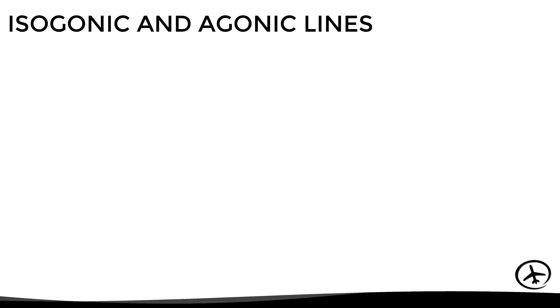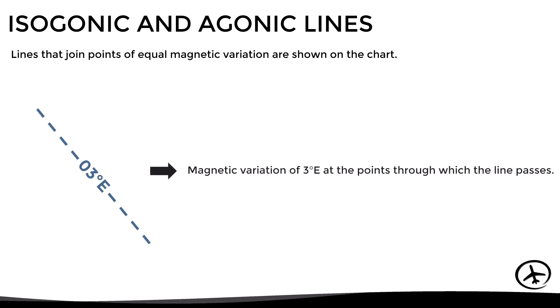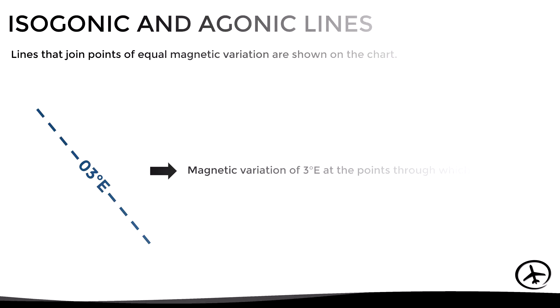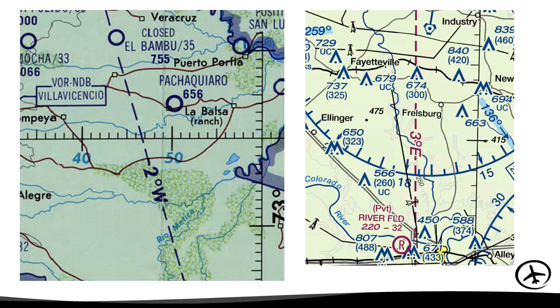Another important element for navigation is the value of magnetic variation in a certain area. For this, the chart depicts the isogonic and agonic lines of magnetic variation with dashed lines. Here we can see some examples of how these lines can be found on a chart.